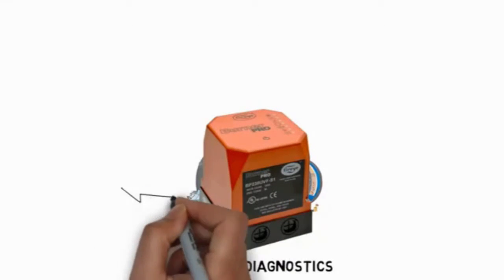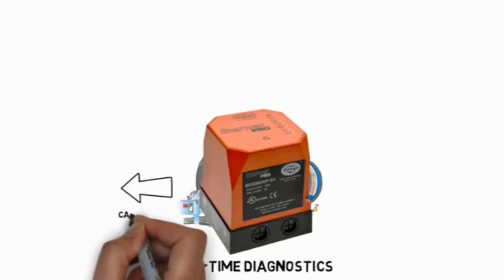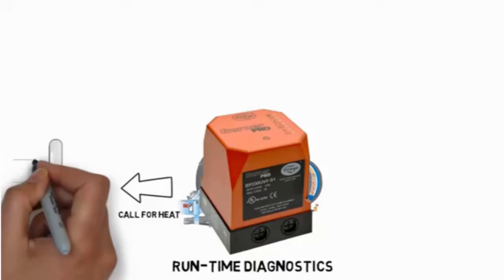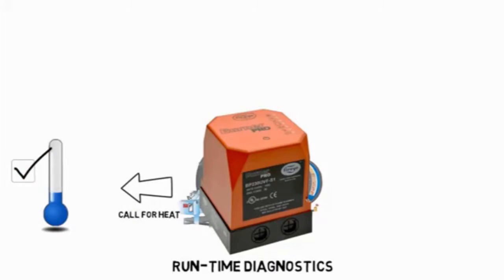Runtime diagnostics check every operating phase of the control to maintain the highest level of integrity. Upon receiving a call for heat, the system turns on the combustion air blower and commands the actuator to move to the purge position.